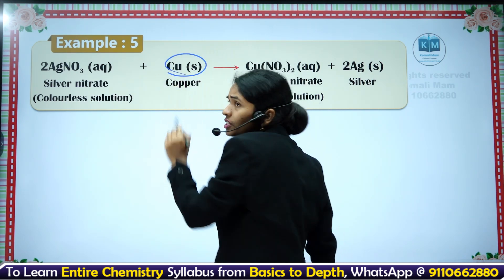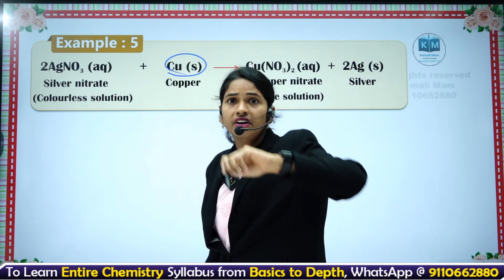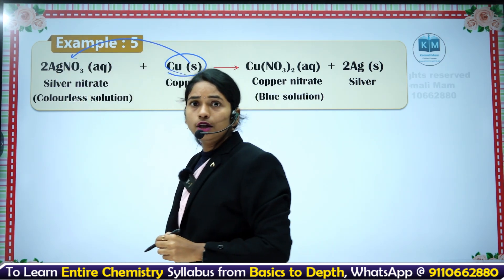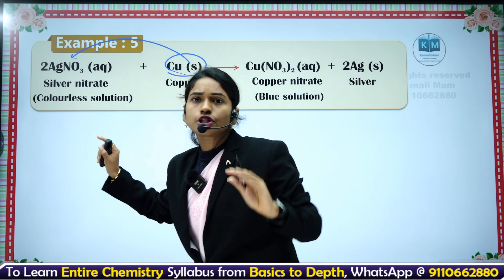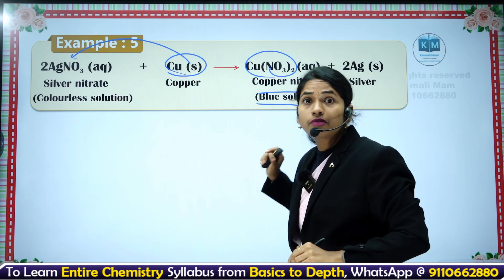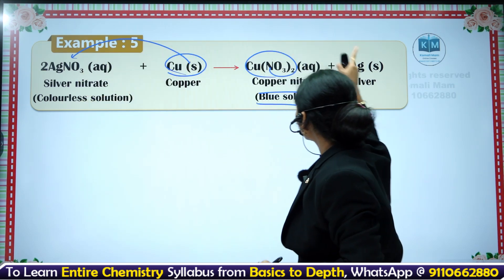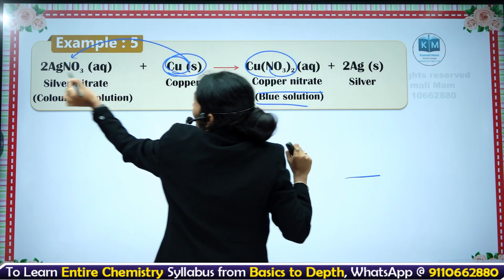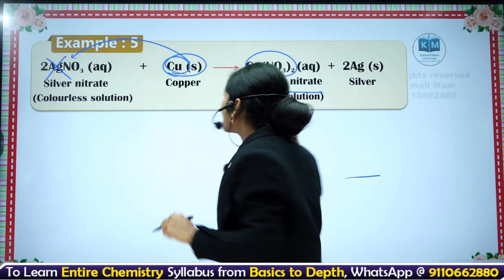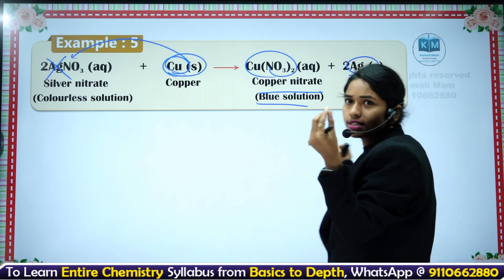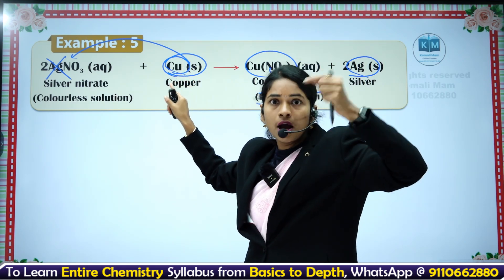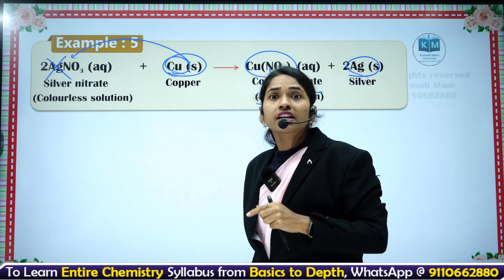Take a copper strip and put it in a silver nitrate solution (AgNO3). When you put copper in silver nitrate solution, the colorless solution slowly changes to a blue color solution because copper nitrate is formed and silver comes out. Copper is more reactive than silver, that is why silver is coming out, and a whitish silver kind of layer forms on the copper strip. This is one of the displacement reactions.